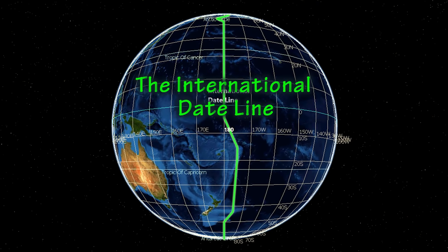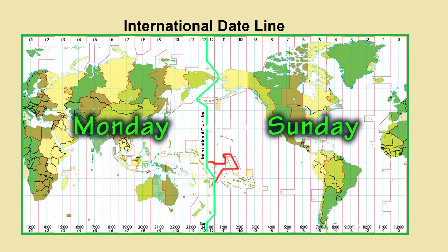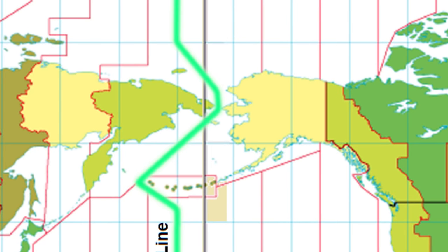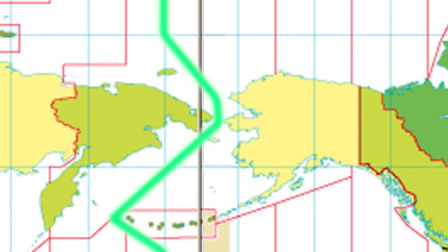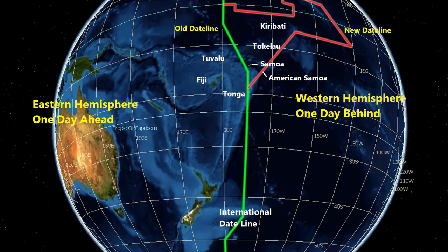The international date line is an imaginary line lying 180 degrees in the line of longitude, on the opposite side of the earth to the prime meridian. This line separates one calendar day from another, and deviates in places to avoid crossing any land. In 1994, Kiribati shifted the date line 2,000 miles east to keep the entire country in the eastern hemisphere. In 2011, Samoa and Tokelau skipped a day and moved westward to be in the eastern hemisphere, so they could have the same date as Australia and New Zealand, their main trading partners.